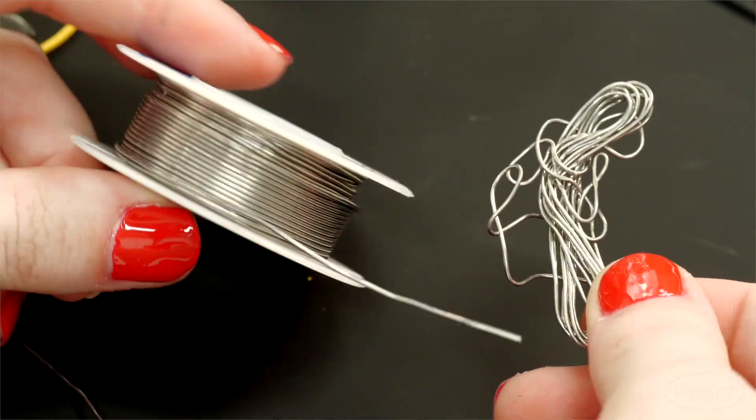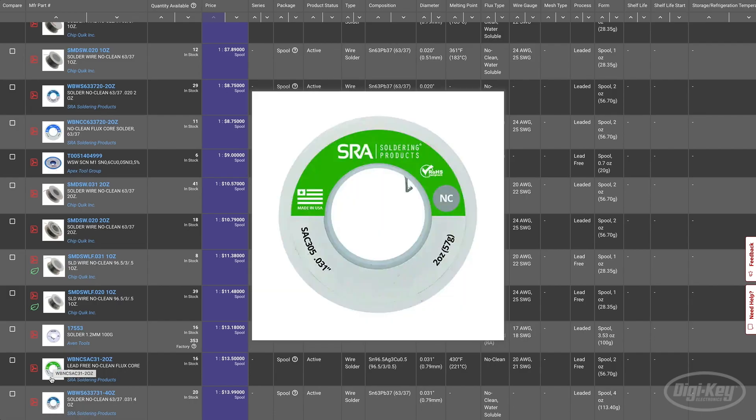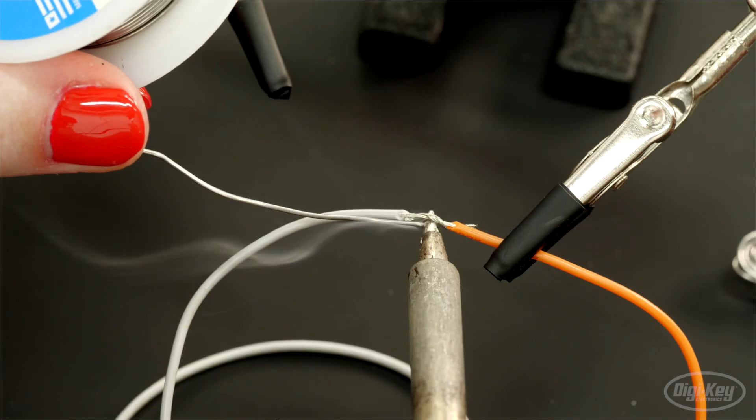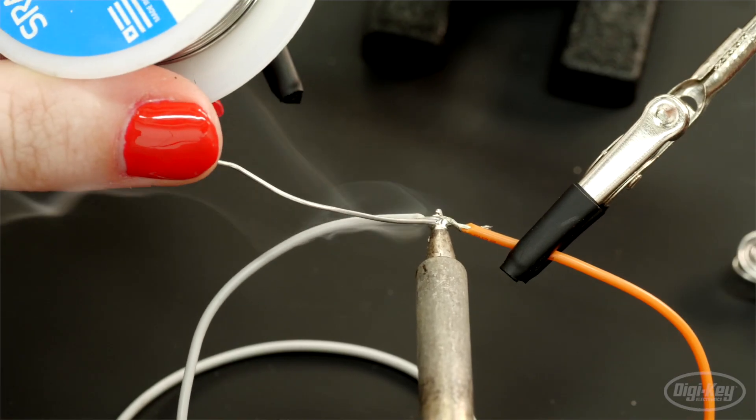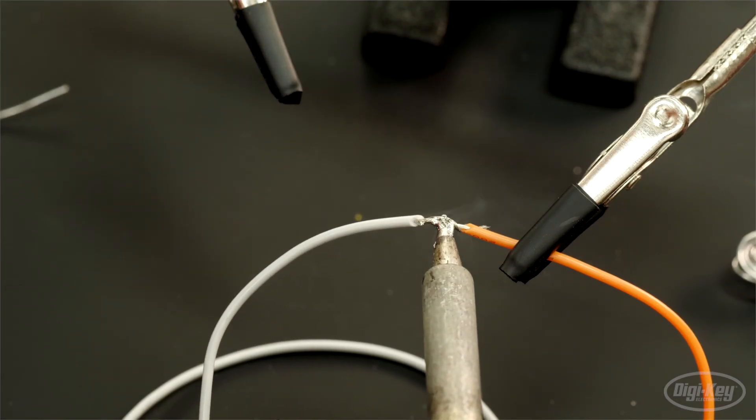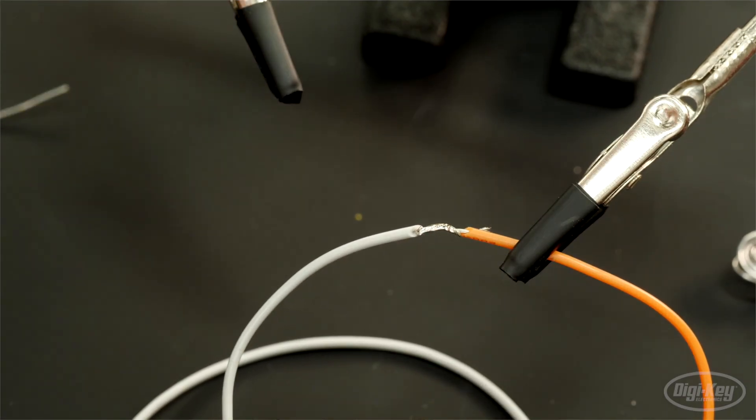For our purposes, a rosin core solder, either with lead or lead-free, is ideal. See, the flux inside boils off as you solder, creating the ideal shielded environment for the metal bond to take place without oxidation.